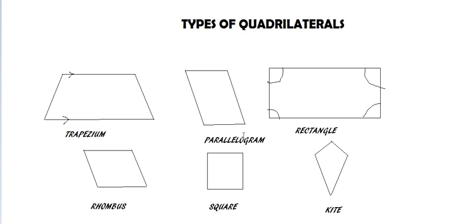The last figure is a kite. In a kite, adjacent sides are equal — but not all adjacent sides. Here, this side is equal to this side, but not to the other side. Similarly, these two other sides are equal in length. A kite cannot be called a parallelogram.